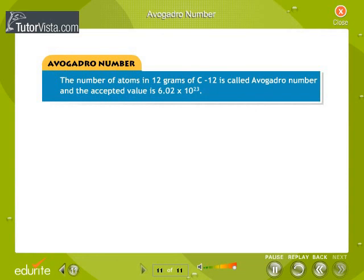Avogadro Number: The number of atoms in 12 grams of carbon-12 is called Avogadro Number, and the accepted value is 6.02 times 10 to the power of 23.